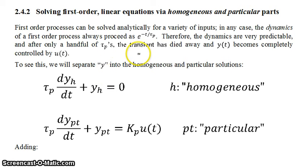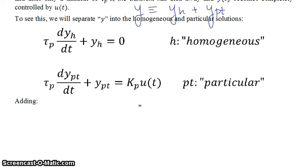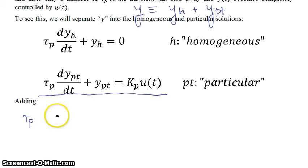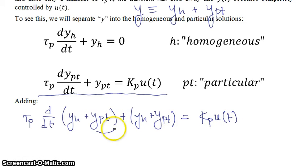If we define y as y homogeneous plus y particular, then you can split up your first-order standard form differential equation into these two parts. To see that this is true, we can take these two equations and add them together. What we get is tau p times the first-order time derivative of y homogeneous plus y particular, plus y homogeneous plus y particular, equals kp times u of t. Because y is defined as y homogeneous plus y particular, we just get back our original first-order standard form equation.